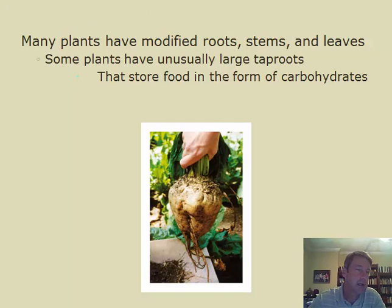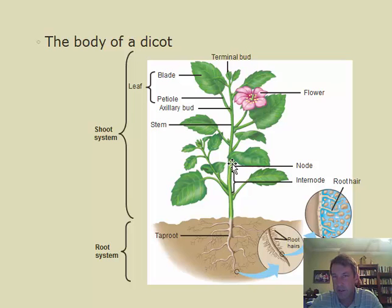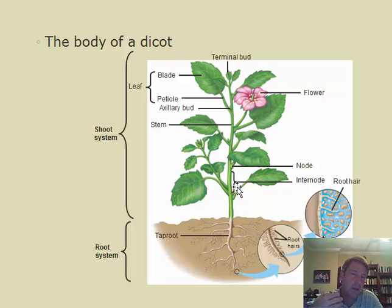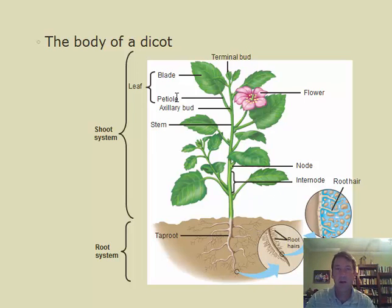The next terms are node and internode. The node refers to the spot on the stem where the petiole attaches. The space between nodes on the stem is called the internode. This is important because new buds and auxiliary growth will come from buds right at these nodes.